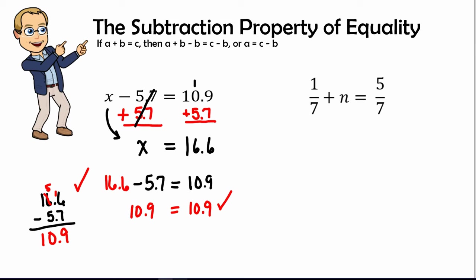Moving on to the second equation, this equation has fractions. We look at the equation and see 1/7 plus the variable n equals 5/7.